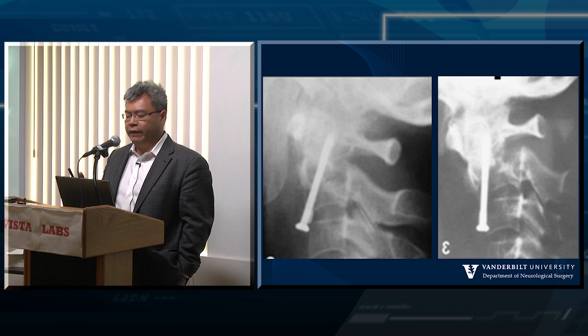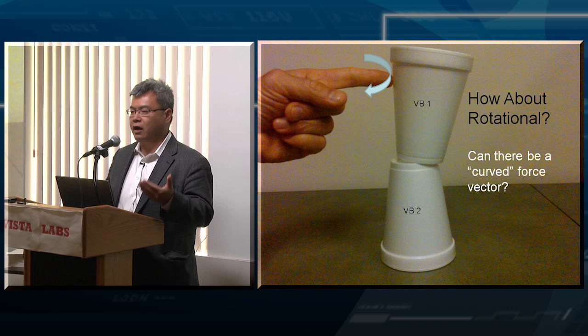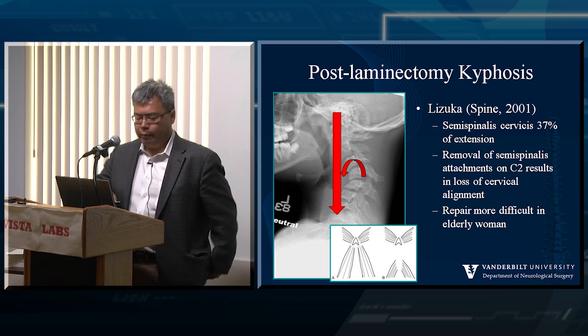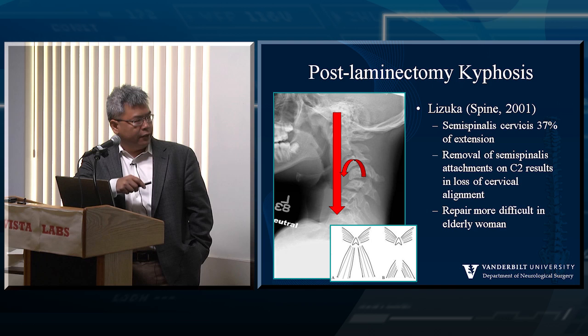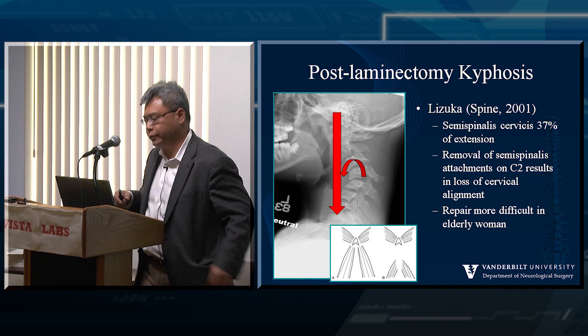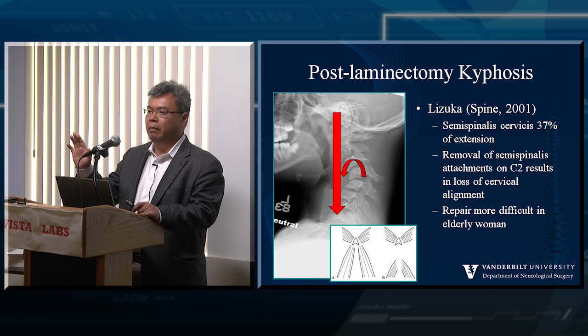So why do we even try that surgery in a situation like this? There are no rotational forces or curved force vectors. When we talk about moment or torque, what we're really talking about is a load across a distance. This is just an example of a post-laminectomy kyphosis in the cervical spine where the weight of the skull is coming down and the center of gravity is separated from the center of rotation at an angle.